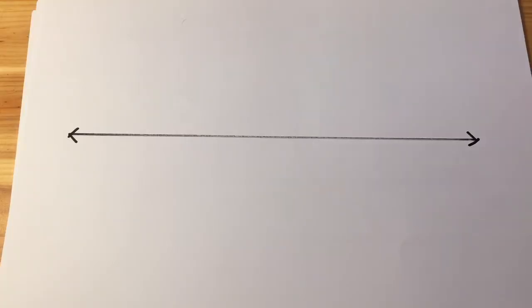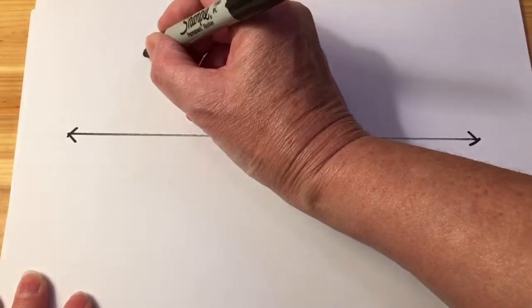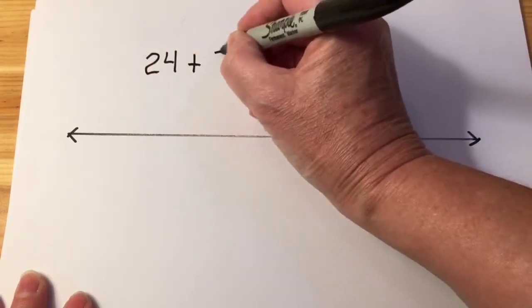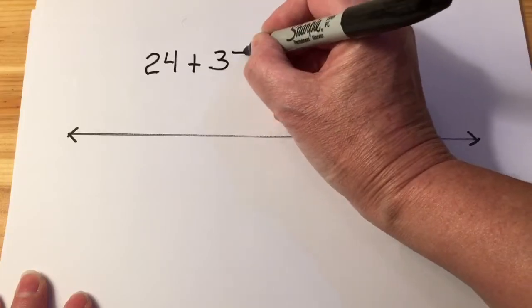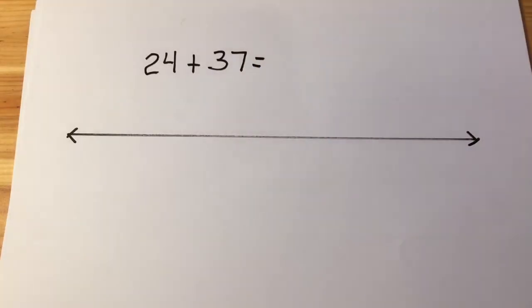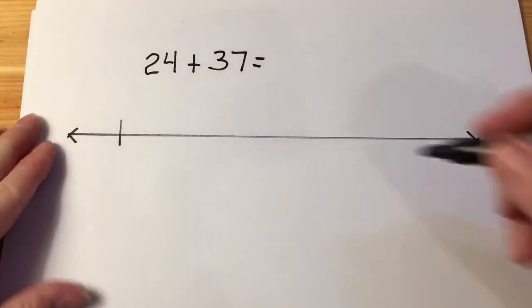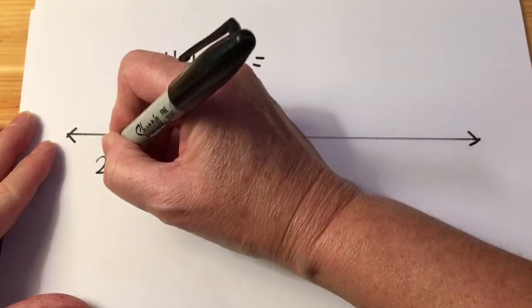For example, when I'm adding, I am increasing in size, so I'm going to start here and move towards the larger direction. I'm starting at 24.